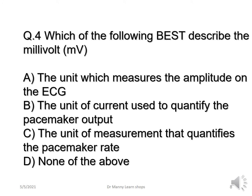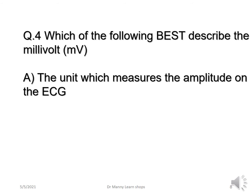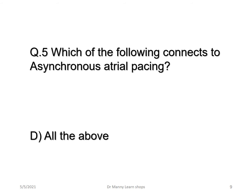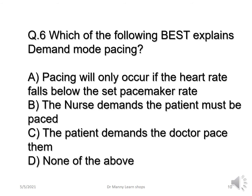Question four: which of the following best describes the millivolt? Is it A, the unit which measures the amplitude on the ECG? B, the unit of current used to quantify the pacemaker output? C, the unit of measurement that quantifies the pacemaker rate? Or none of the above? The correct answer is A — the unit which measures the amplitude on the ECG. Question five: which of the following best explains demand mode pacing?